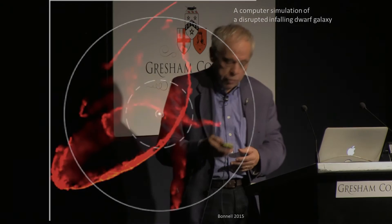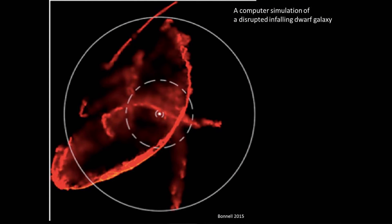Here's an example. This is a computer simulation of a small galaxy coming into the Milky Way, being pulled apart by what we call galactic tides. As this galaxy approaches our Milky Way, the inner part feels a stronger force than the outer part, and that stretches it out, eventually leaving behind a whole stream of debris.